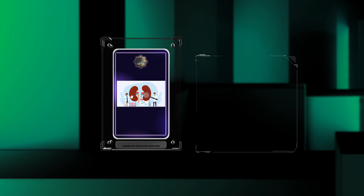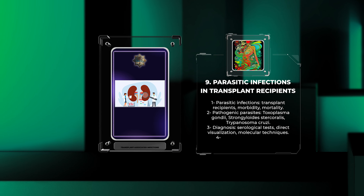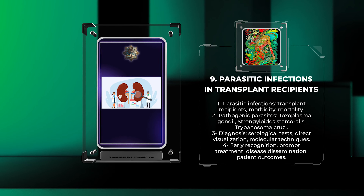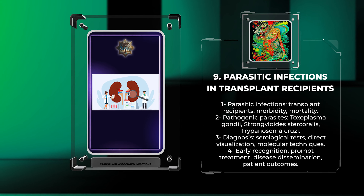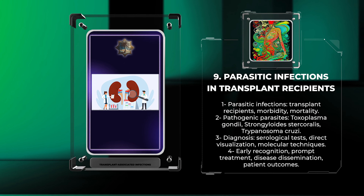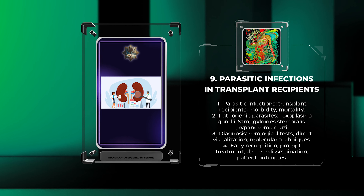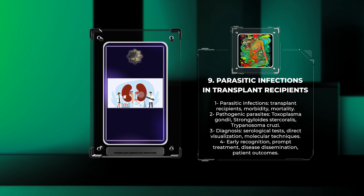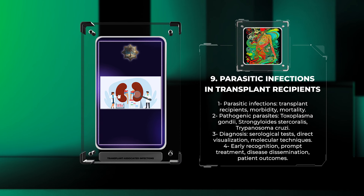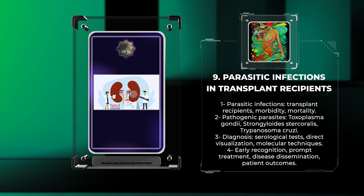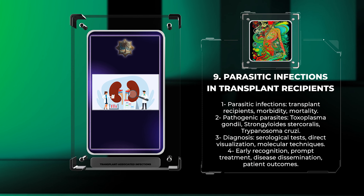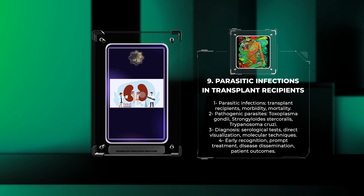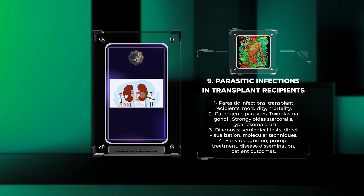Parasitic infections in transplant recipients, although relatively less common compared to other types of infections, can still lead to significant morbidity and mortality. Parasitic infections commonly encountered include Toxoplasma gondii, Strongyloides stercoralis, and Trypanosoma cruzi. Diagnosis involves a combination of serological tests, direct visualization of parasites, and molecular techniques. Early recognition and prompt treatment are crucial to prevent disease dissemination and improve patient outcomes.